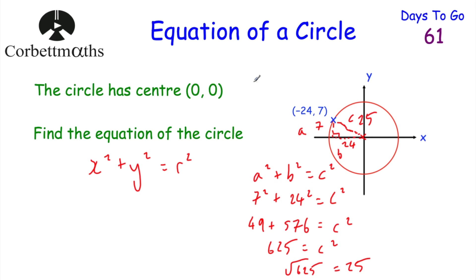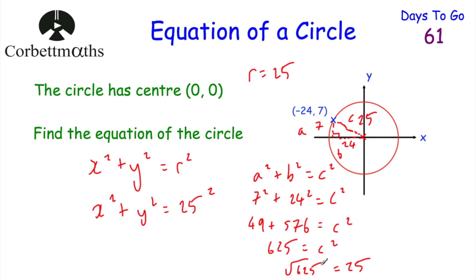Now we know the radius is 25, we can find the equation. It's x squared plus y squared equals the radius squared, so x squared plus y squared equals 25 squared. 25 squared is 625, so the equation of the circle is x squared plus y squared equals 625.